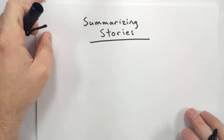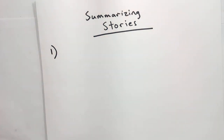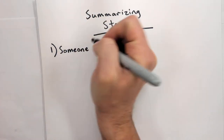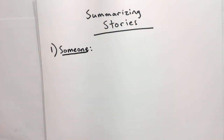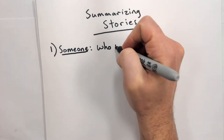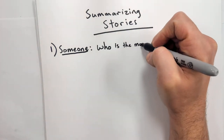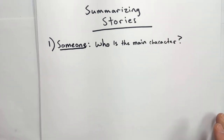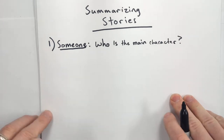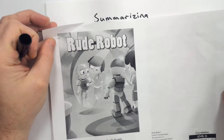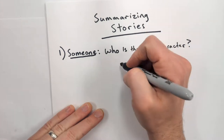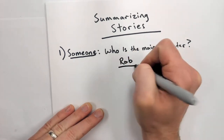Step one when writing a summary is to think about someone — who is the main character? In this book, Rude Robot, there are a couple of characters: Bot and Rob. I think that Rob is the main character because most of the story is about him. So I'm going to write: Rob is the main character.